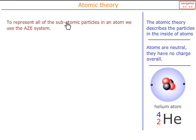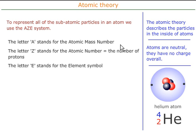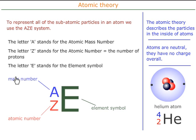We can represent the subatomic particles in an atom using the A, Z, E system. In this, the letter A stands for the atomic mass number, Z for the atomic number, and E is the element symbol. A goes at the top, Z goes at the bottom, and the element symbol goes at the side.